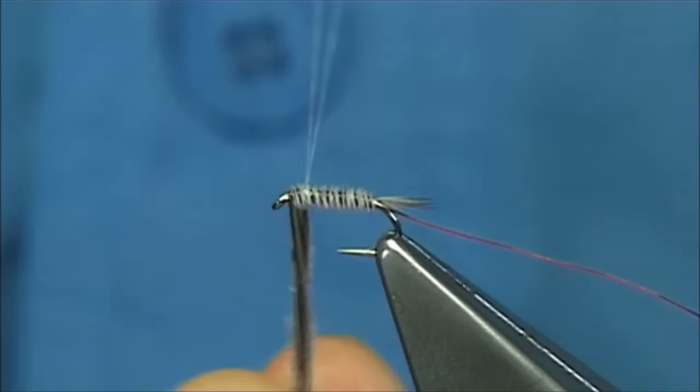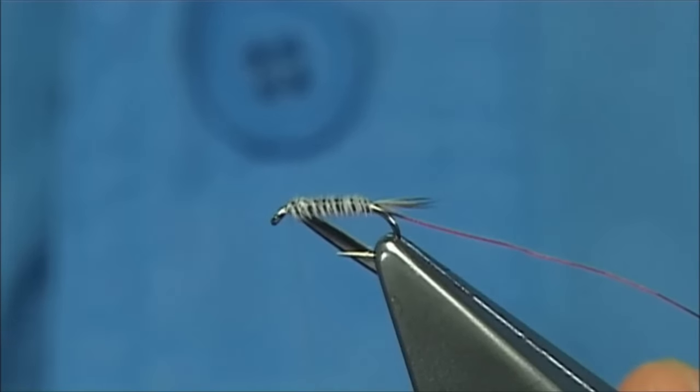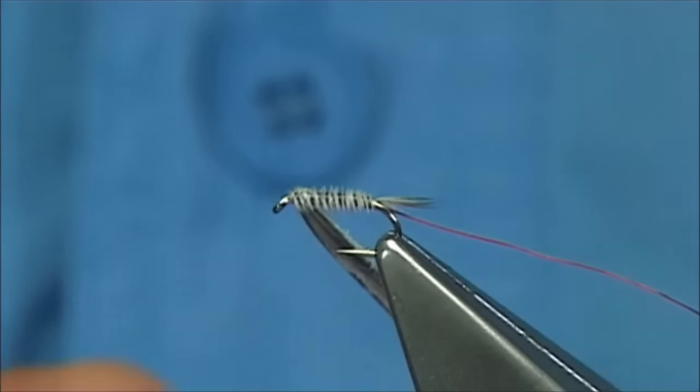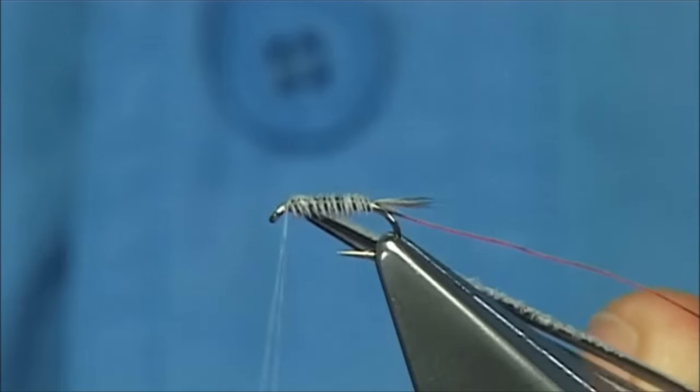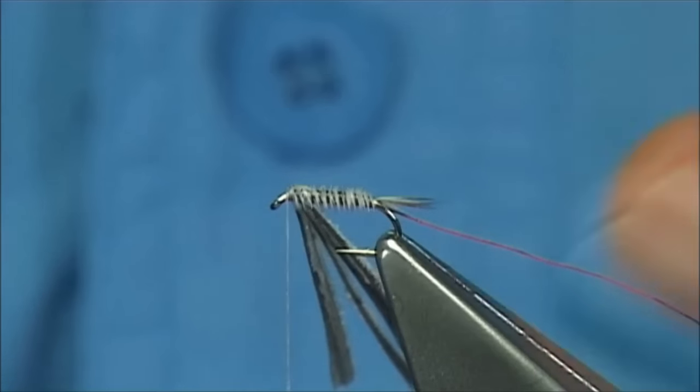To lock it in, what we do is we cross the turkey, do a tight turn, do another one onto the hook. Cross, and then another one to the hook. This locks it in.